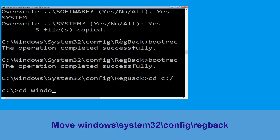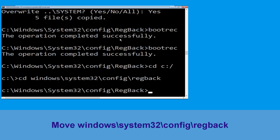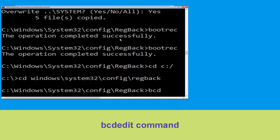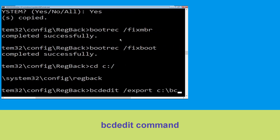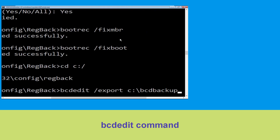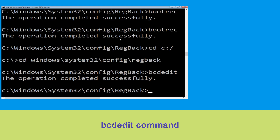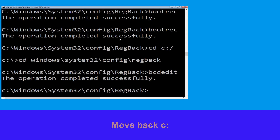Now execute this command: type CD Windows\System32\config\. Type CD C:\ and then type CD C:\BCD backup and hit Enter to execute this command. Then type CD C:\ and hit Enter.